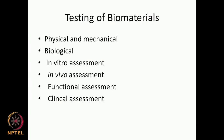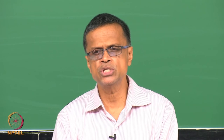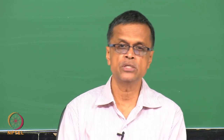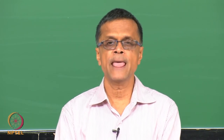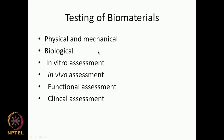Testing of biomaterials is also very important, just like drug discovery — once a drug is discovered, it goes through animal testing and human testing in stages 1, 2, and 3. Similarly, biomaterials must undergo physical and mechanical testing — for example a diaphragm valve must have certain tensile and flexural strength. Biological testing checks for biocompatibility, toxicity, and genotoxicity. In vitro assessment uses laboratory instruments and cell lines, while in vivo assessment uses animals — rabbits, guinea pigs, dogs, or sheep.